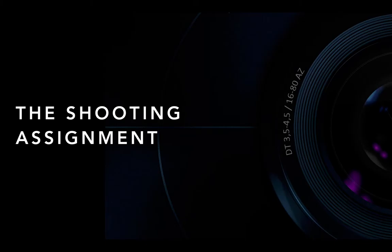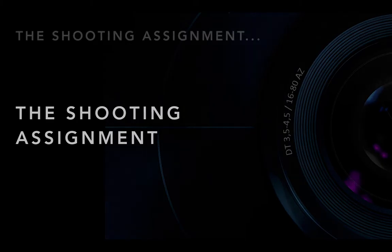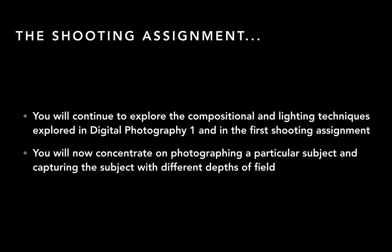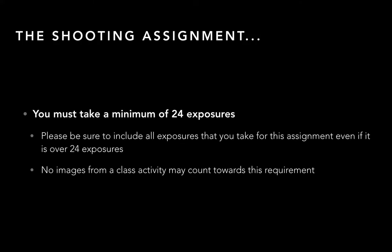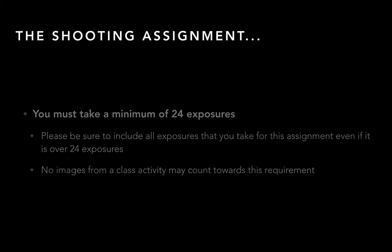For this shooting assignment, we're going to split it into a technical part and then a photographic or artistic part. You're going to continue thinking about things like composition and lighting that we did in photo one. You'll think about how depth of field can affect what you're doing — shoot the first part of the assignment, look over them to make sure you have them, then go back and photograph for the second part. You need to take at least 24 exposures; anything you do in class for practice does not count towards that requirement.